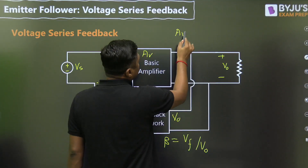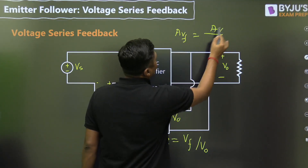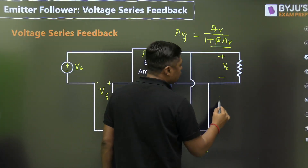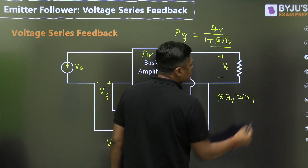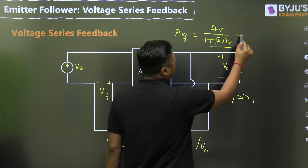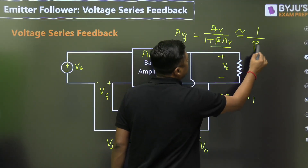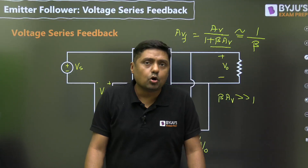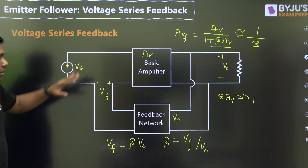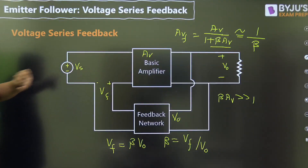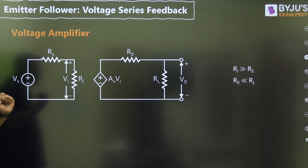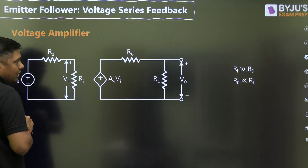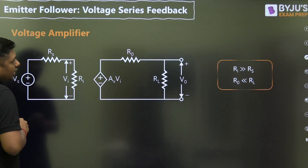After feedback, the gain becomes AV divided by (1 + β·AV). Normally β·AV is much greater than 1, so 1 is negligible, AV cancels, and the approximate gain is 1/β. Now applying the same concept to the emitter follower — we are sampling the voltage and mixing the voltage. This is the basic diagram of a voltage amplifier, with output resistance and input resistance.